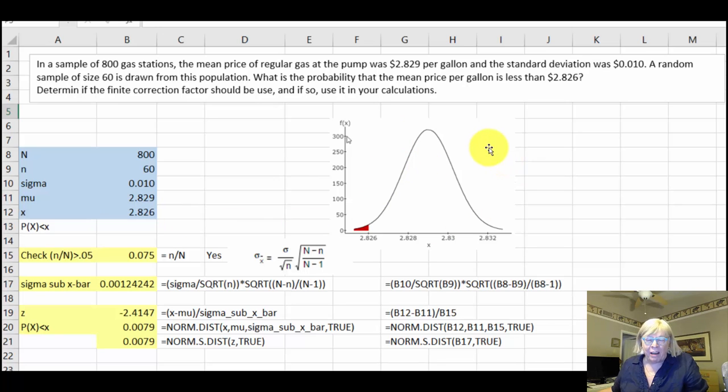I always find it extremely helpful and it cuts out a lot of errors if you can sketch the normal curve, put in the values for your mean. Our mean here, $2.829, is right in the center. Because we've only got one penny for the standard deviation, $2.826 falls right there to the left of the mean, on the left tail. That red area right there is what we're trying to find, which is pretty small. It gives you a hint that it's going to be something less than 0.5 and probably less than 0.2.